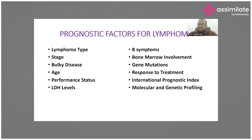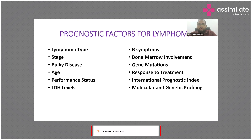Other factors include LDH levels, the B symptoms, whether bone marrow is involved or not, mutation, and the genetic changes. How the patient has responded to the disease — all these things can be amalgamated into some kind of score called prognostic scores.